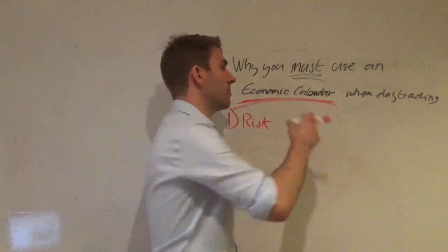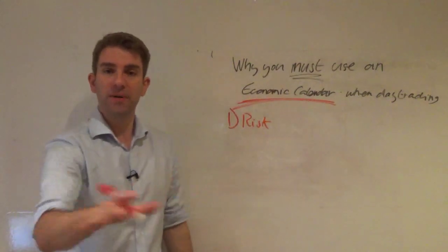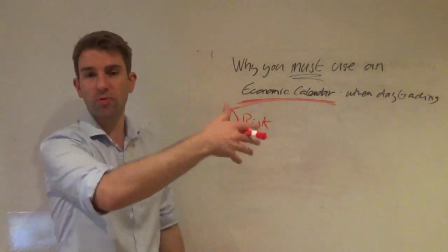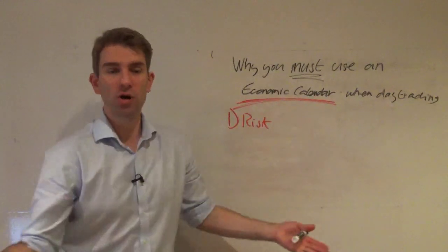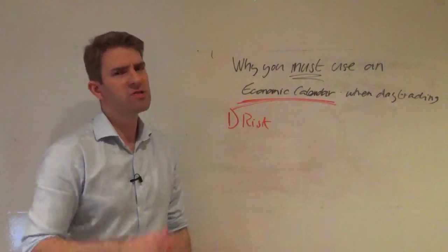As soon as you come into a point of time where you have a binary event, you completely give up the control of risk. It could spike up 200 points, it could spike down 200 points. You're going to lose money or make money and for me, I'm not interested in the toss of a coin.